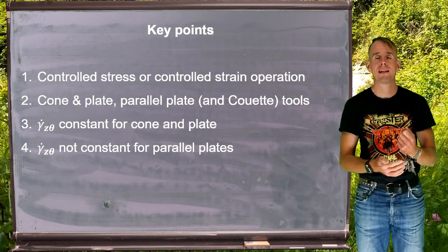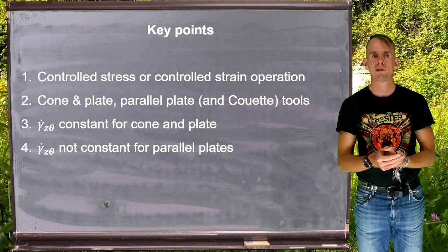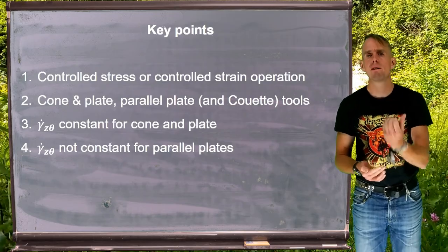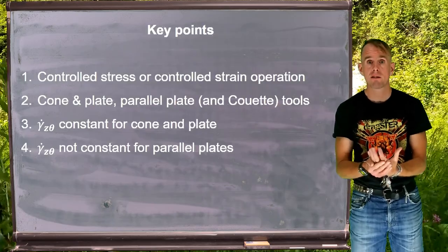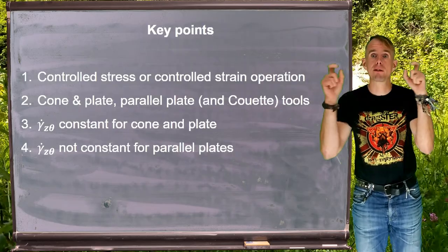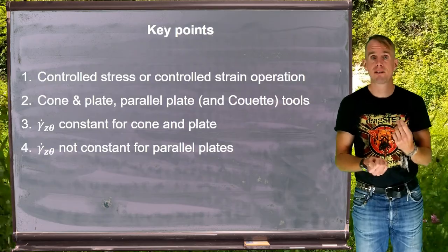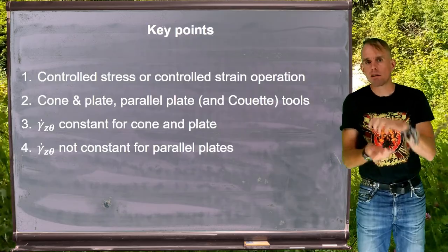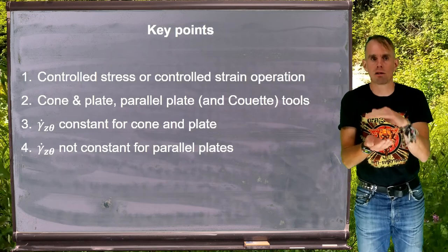We've seen that the cone and plate tool is ideal because our shear rate is constant throughout our fluid. From a pragmatic standpoint, if we have fluids of very high viscosity, it may be very hard or impossible to get good material contact between the top cone and the bottom plate and ensuring that the material fills the entirety of the gap between the two. Parallel plates, we find that our shear rate is a function of radius, which is non-ideal, but pragmatically it's very easy to get material contact fully between top and bottom plate for high viscosity liquids. And so the choice of tool is going to be a compromise.